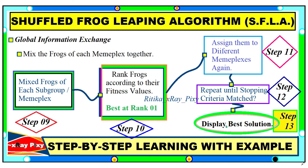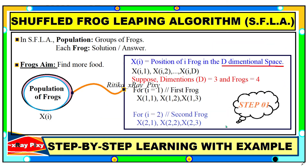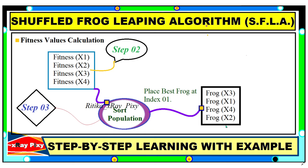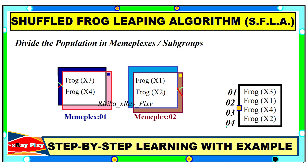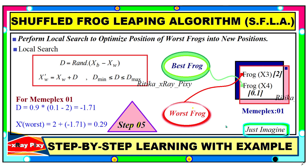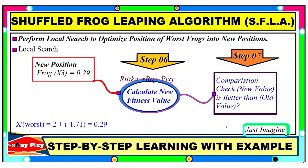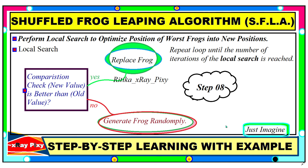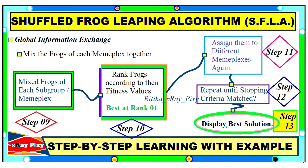Once the stopping criteria is matched, we display the best solution. To summarize: initialize the population randomly, calculate fitness values, sort the population and place the best at the first rank, divide into subgroups, select the best and worst in each subgroup, perform local search, calculate new values, compare old and new solutions, replace or regenerate, mix all frogs, rank them, reassign to subgroups, and repeat until stopping criteria is met. That's all about this video — if you have any questions, you can comment below.